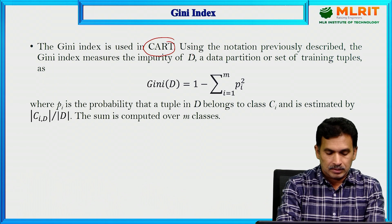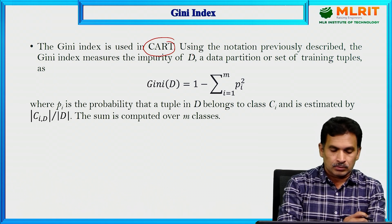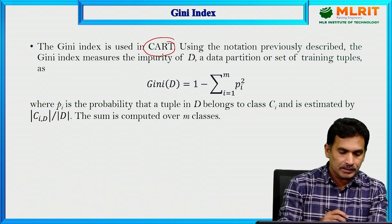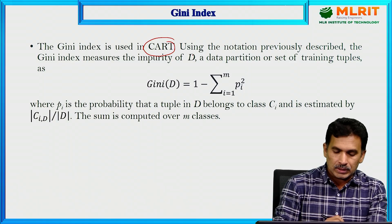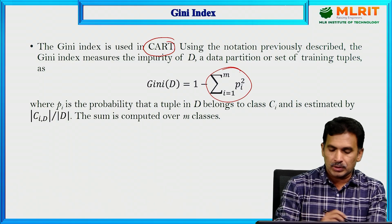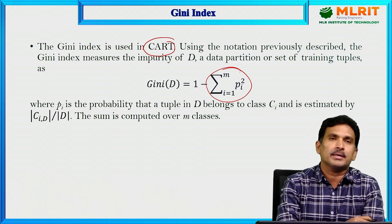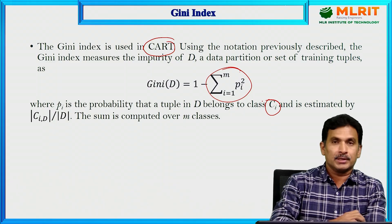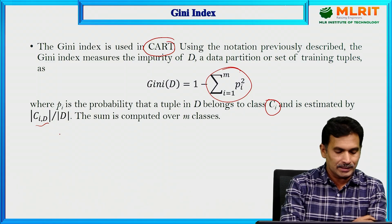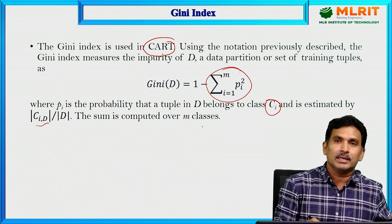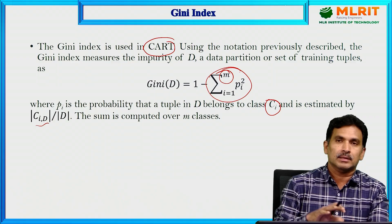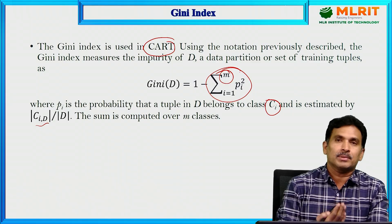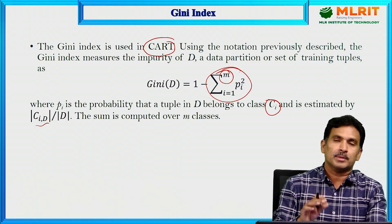If you select a particular attribute to partition the set of tuples, we calculate the impurity, and based on that we select the attribute. For a data partition or set of tuples, the impurity is calculated as: Gini(D) = 1 minus the sum from i=1 to m of p_i squared, where p_i is the probability that a tuple in D belongs to class C_i, estimated by |C_i,D| / |D|. The sum is computed over the m classes.